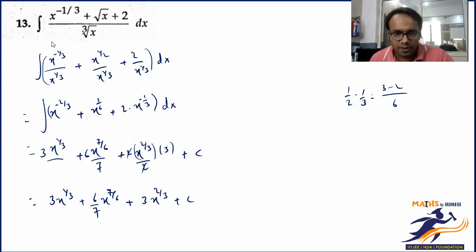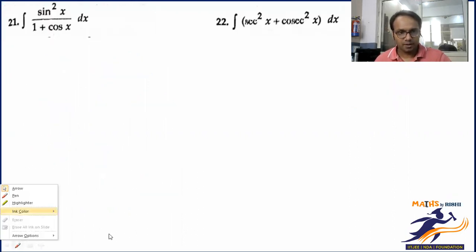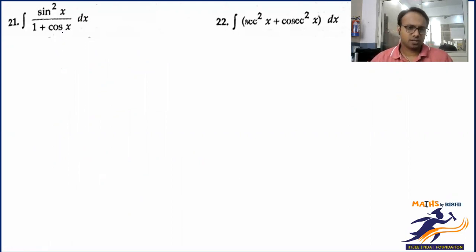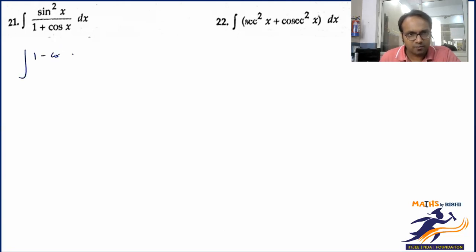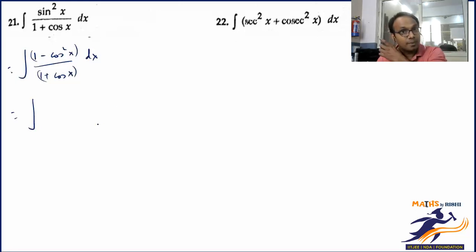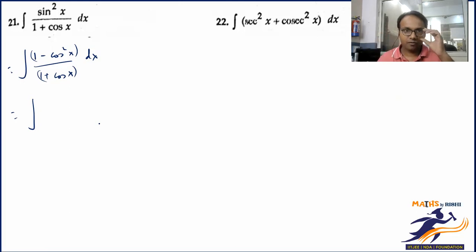I hope you understand that and will be able to deal with such questions. We will do 2 more questions — trigonometric ones. So: integrate sin²x upon (1 + cosx). The approach is to always try to bring the expression into an integrable form. sin²x can be written as 1 minus cos²x. With 1 plus cosx in the denominator, this looks like a² minus b², which factors as (a minus b)(a plus b). The (a plus b) factor is available in the denominator, leaving only (1 minus cosx).